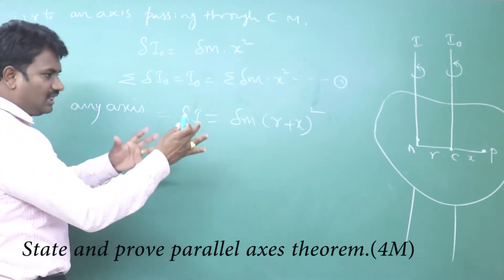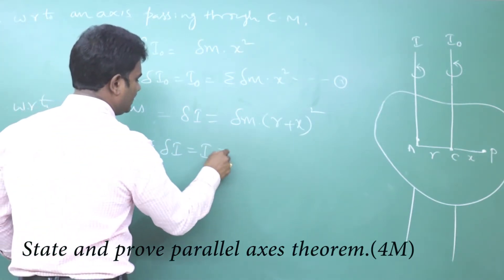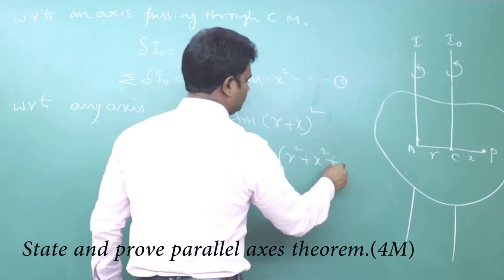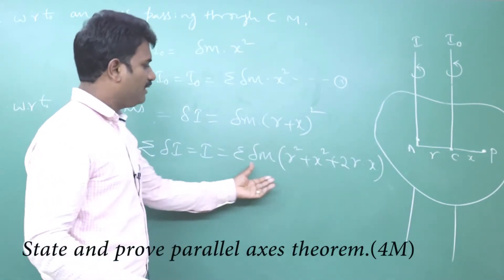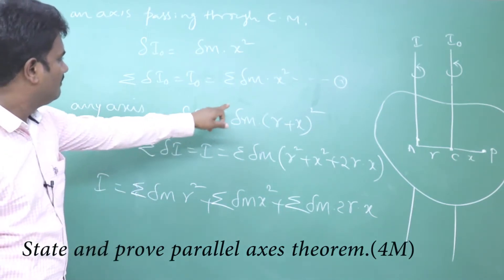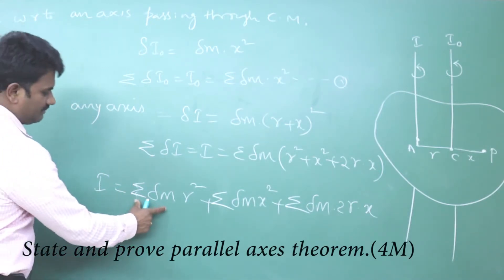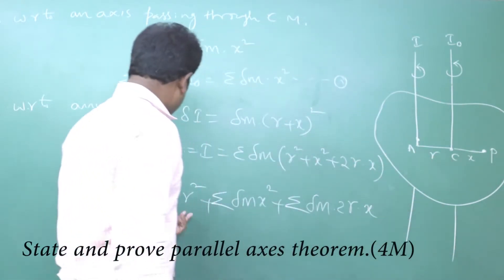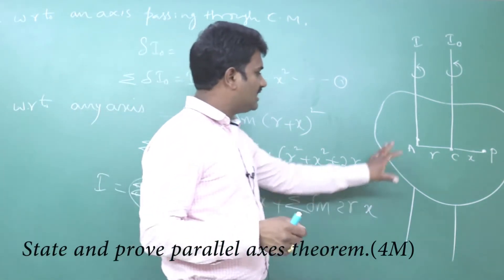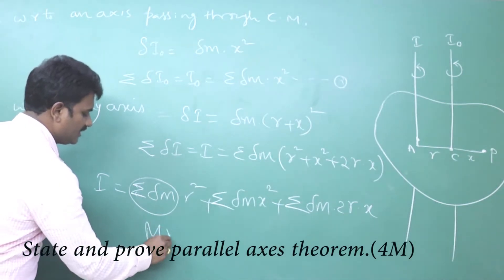To find the moment of inertia of the entire body, we sum over all particles: Σ δI = I = Σ δm · (r + x)². Opening this bracket: I = Σ δm · r² + 2r · Σ δm · x + Σ δm · x². For the first term, since r is fixed, Σ δm · r² = r² · Σ δm = Mr², where M is the total mass of the plane lamina.